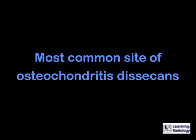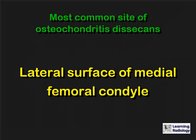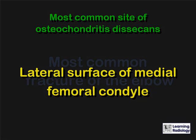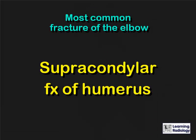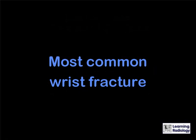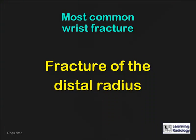What is the most common site of osteochondritis dissecans? The lateral surface of the medial femoral condyle of the knee. What is the most common fracture of the elbow? A supracondylar fracture of the humerus. What is the most common wrist fracture? A fracture of the distal radius.